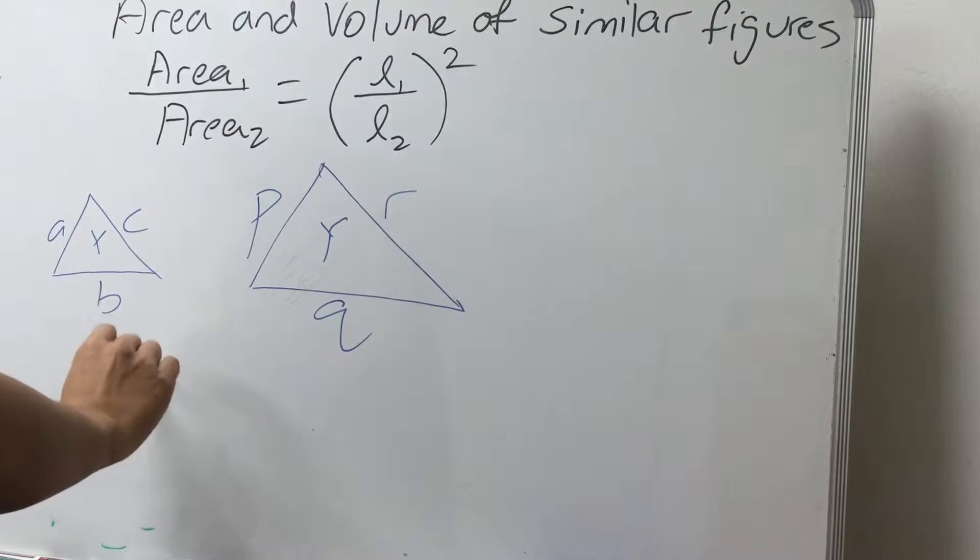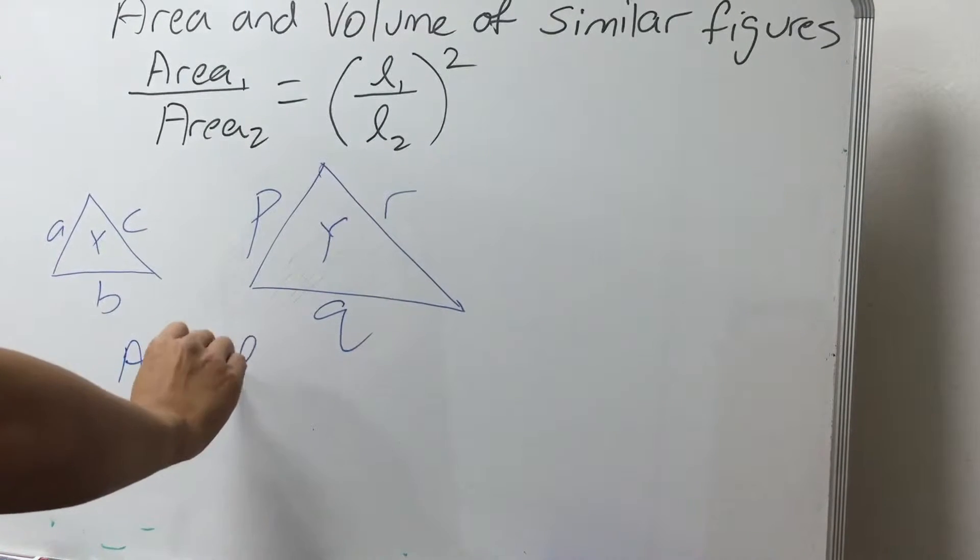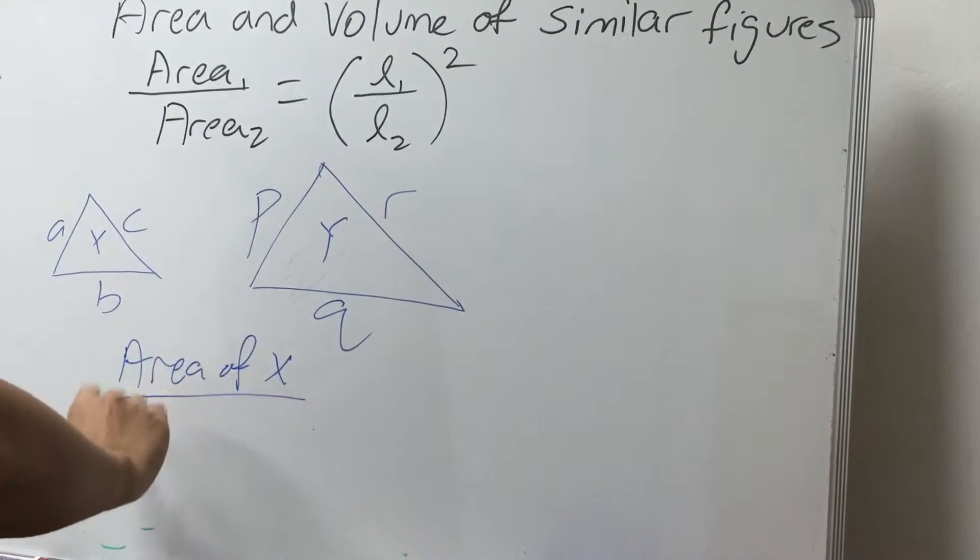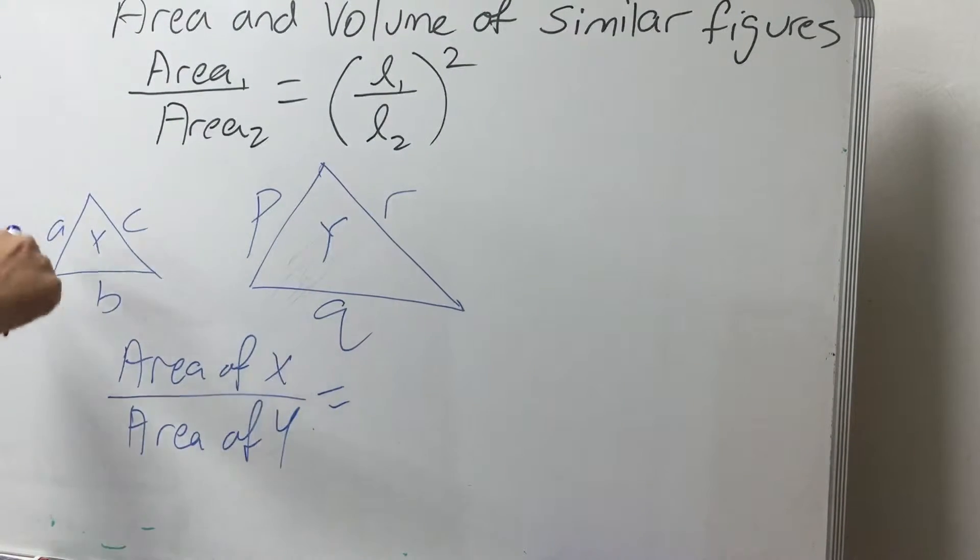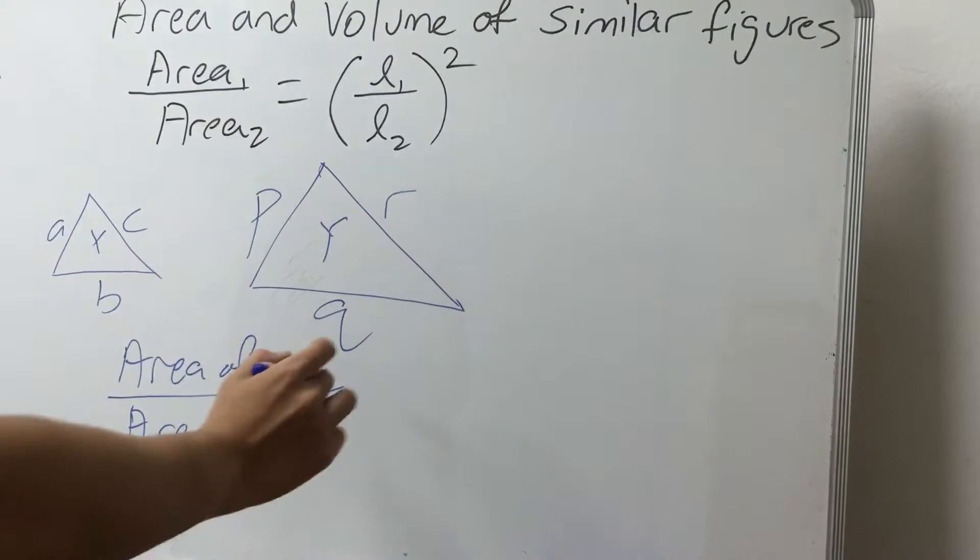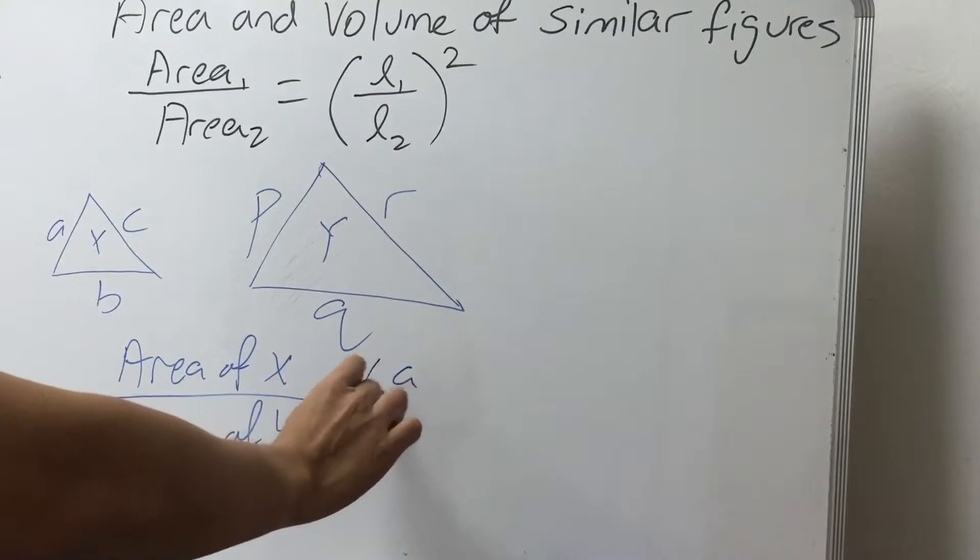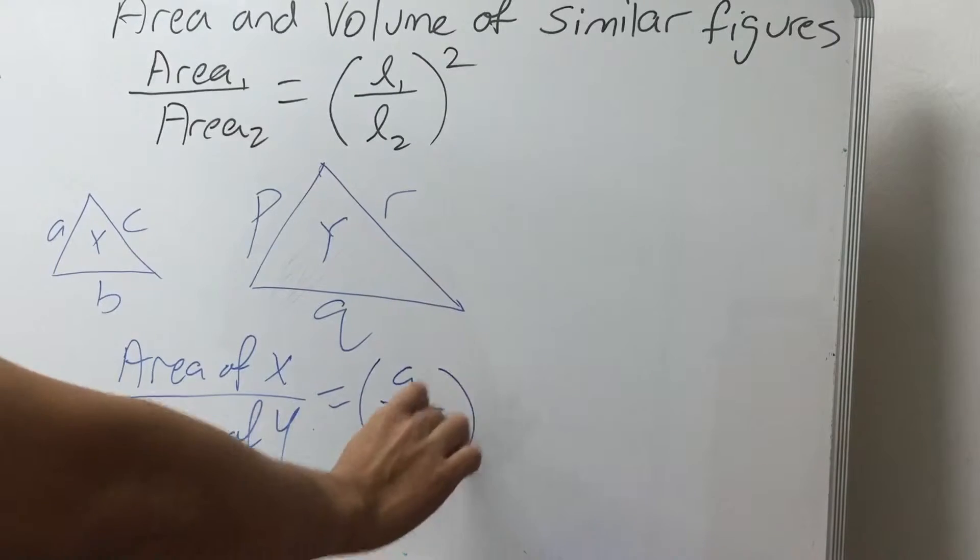So if they are similar to each other, the area of X over the area of Y will be equal to any of the similar sides. For example, A over P squared.